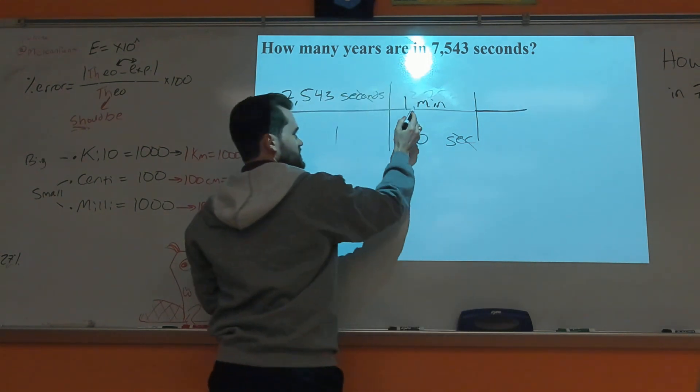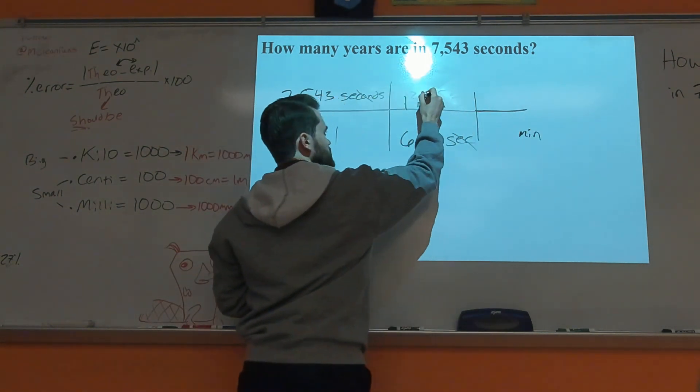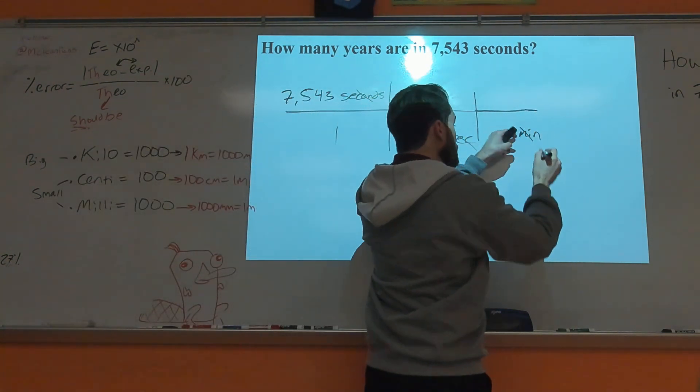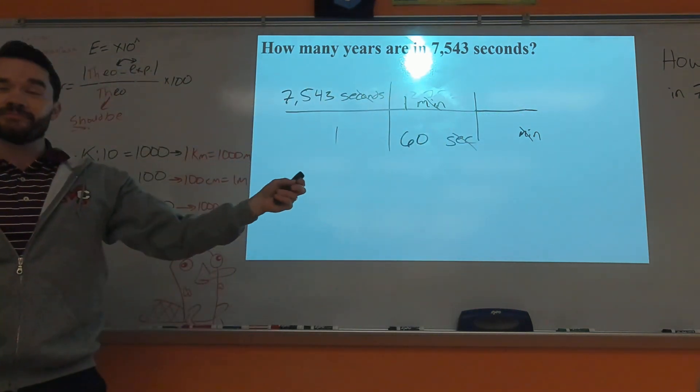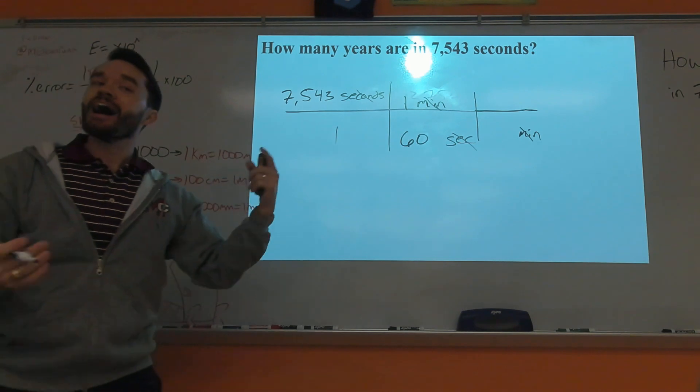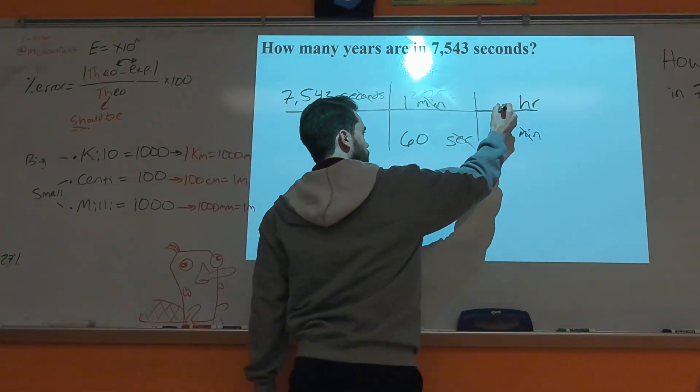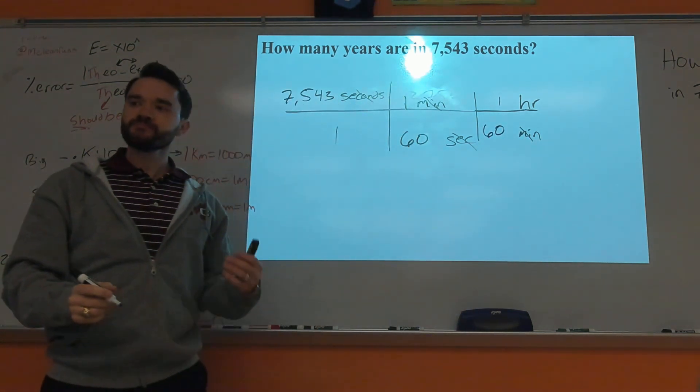Okay. Now, if minutes are here, minutes has to go diagonal. Remember, the old unit always goes diagonal so it can cancel off. New unit goes on top. So, if you know how to go from minutes to years, again, you could put years up there, but I don't know how many minutes are in a year. I do know how many minutes are in an hour, though. So, we'll say HR for an hour. In one hour, there's 60 minutes, right?